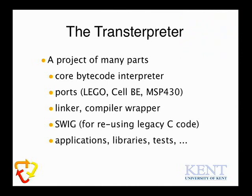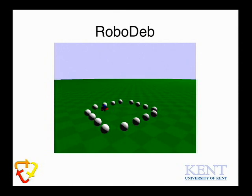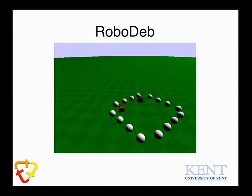The Transterpreter is a project of many parts. There's a core bytecode interpreter, but languages live in an ecosystem. We maintain various ports with a wrapper around the core — we run on the Lego, the Cell Broadband Engine at the core of the PS3, and the MSP430, a very low-power embedded chip from Texas Instruments. There's also a linker, a compiler tool chain wrapper, and a SWIG tool chain for binding to foreign C libraries. One highlight: we have a VMware virtual machine that includes all our tools, allowing you to program simulated robots directly without a large install process. These are videos of some early — not entirely successful — robot testing.